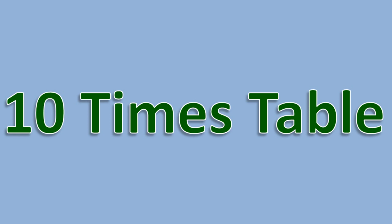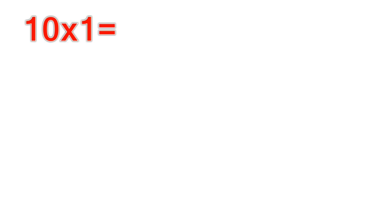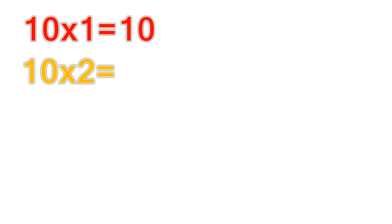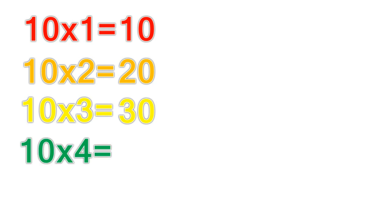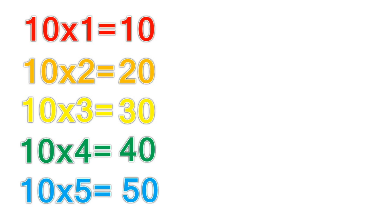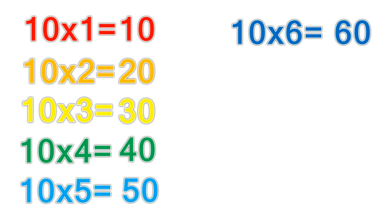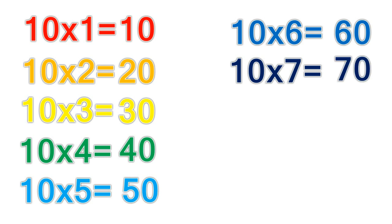10 times table. 10 times 1 equals 10. 10 times 2 equals 20. 10 times 3 equals 30. 10 times 4 equals 40. 10 times 5 equals 50. 10 times 6 equals 60. 10 times 7 equals 70.